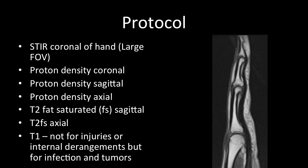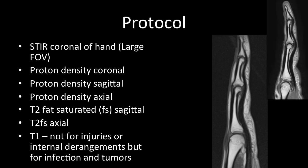Proton density images are very important for musculoskeletal imaging — they are really helpful for imaging ligaments, tendons, and small structures like volar plates and pulleys, and for identifying their injuries. T1 weighted images are not required for internal derangement scans, as tendons and small triangular structures like volar plates are not easily identified on T1. However, T1 weighted images are required for imaging of the marrow, so they are needed for infections and tumors.